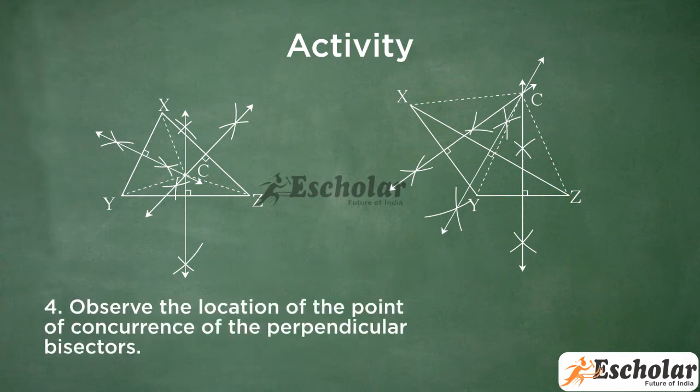Fourth, observe the location of the point of concurrence of the perpendicular bisectors. The location of the point of concurrence of the perpendicular bisector is outside the triangle.